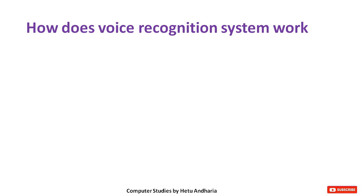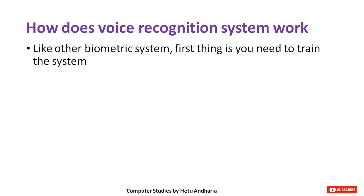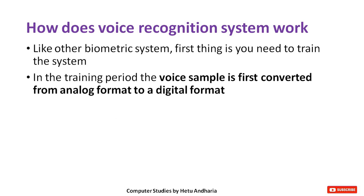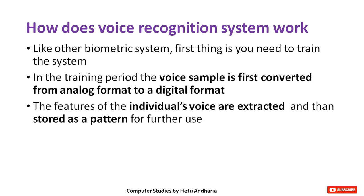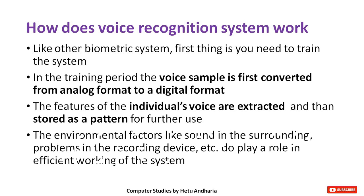How does a voice recognition system work? Like other biometrics, the first thing is to train the system. During the training period, the voice sample is first converted from analog format to digital format. The features of the individual's voice are extracted and stored as a pattern for further use. The computer takes the voice sample, extracts the individual's voice features, and stores them in different patterns for reuse. Environmental factors like surrounding sound and problems in recording devices do play a role in the efficient working of the system.